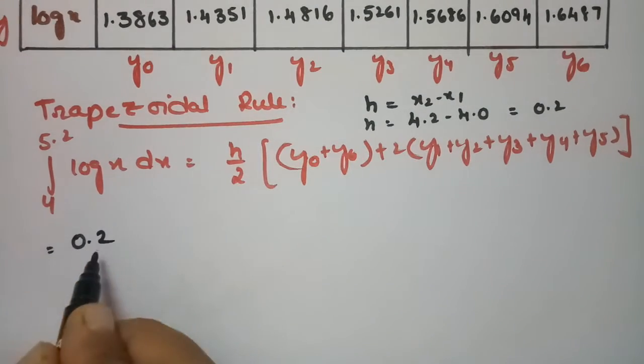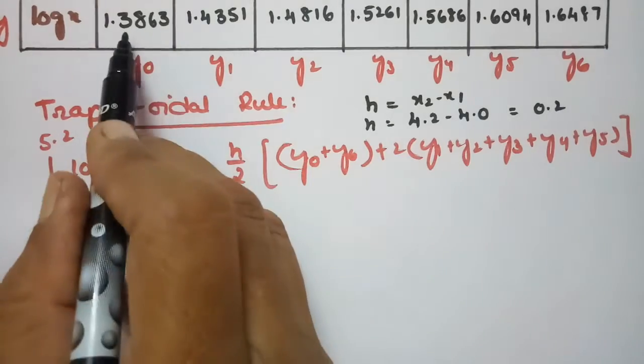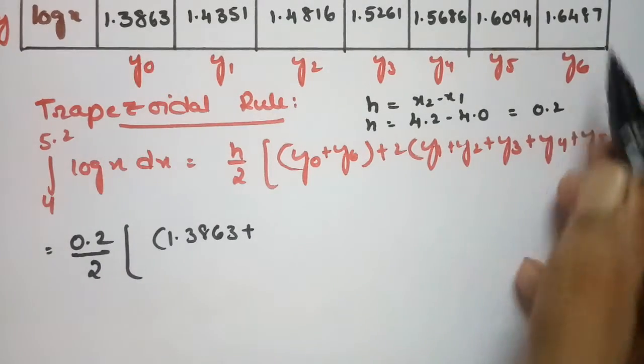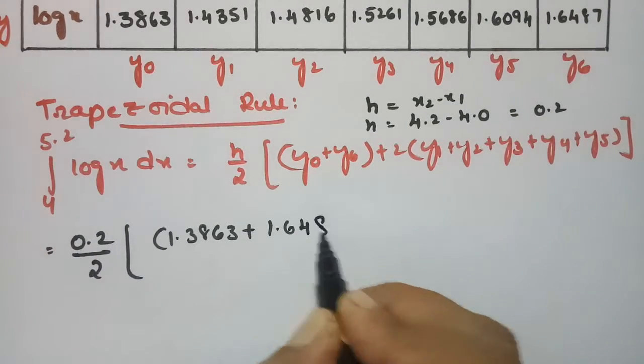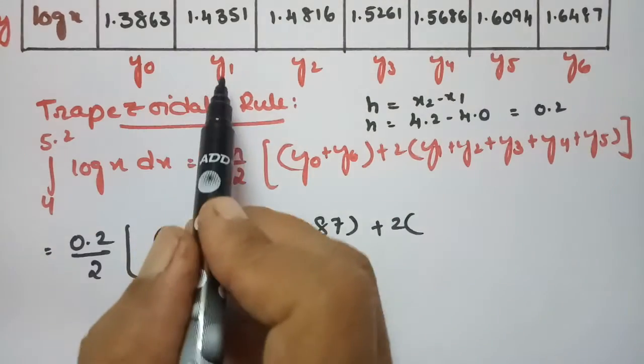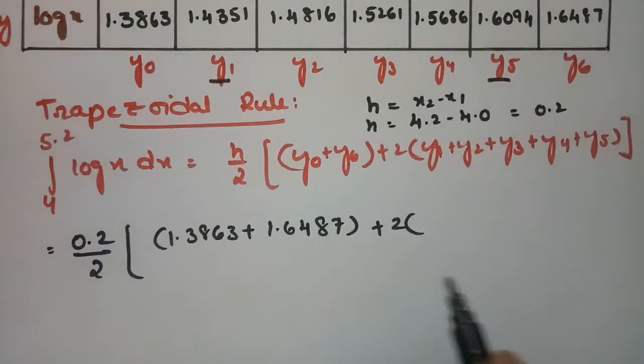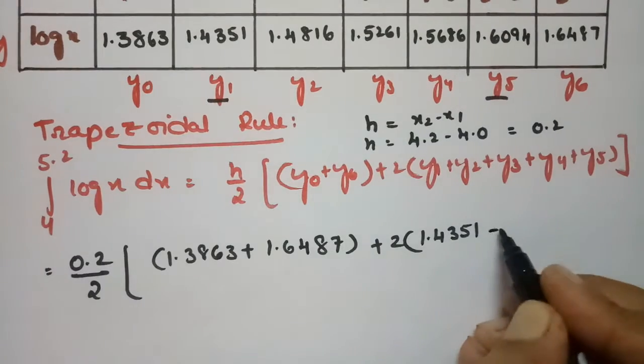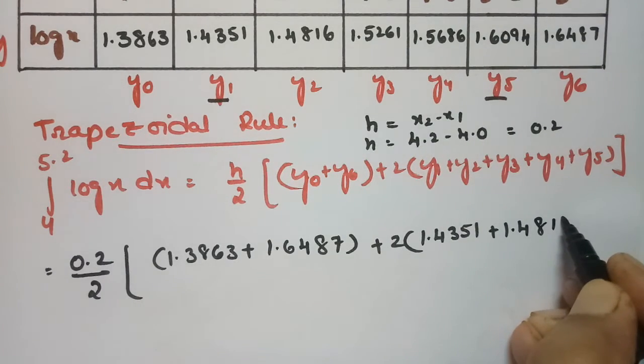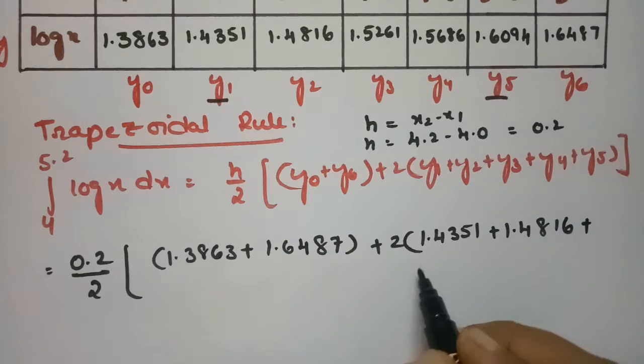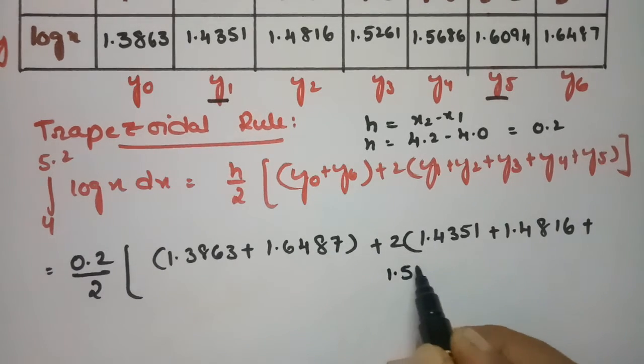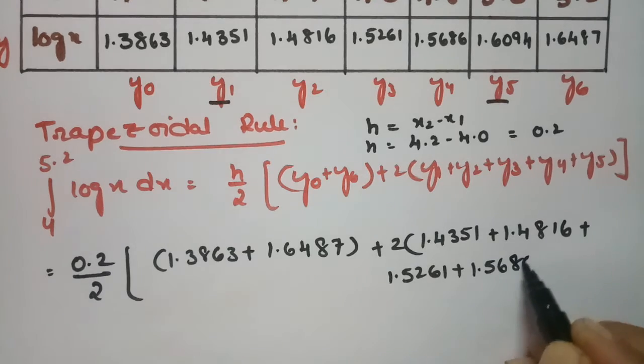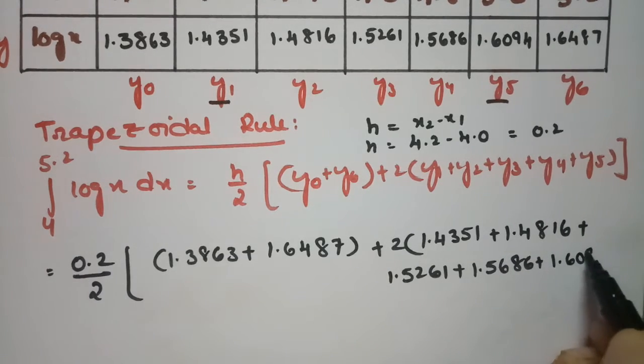So here if I substitute the h value as 0.2 by 2, what is y naught? Y naught is 1.3863 plus the final value here is 1.6487 plus 2 times the rest of the values from y1 to y5. So this is 1.4351 and next one this value is 1.4816 plus 1.5261.